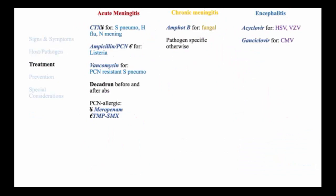Treatment of meningitis obviously depends on the pathogens you are suspecting. In the case of acute meningitis, it's imperative to cover for strep pneumoniae, H. flu, and Neisseria meningitidis with ceftriaxone. You include ampicillin or penicillin for coverage of listeria, as no cephalosporins will cover this pathogen. Vancomycin is added for the possibility of penicillin-resistant strep pneumoniae. Dexamethasone is typically given before the first dose of antibiotics and for several days after to reduce inflammation. In the penicillin-allergic host, carbapenem therapy with meropenem is recommended, and an alternative for listeria would be Bactrim.